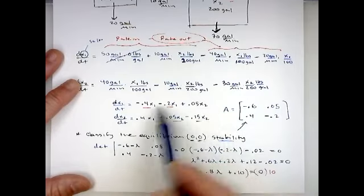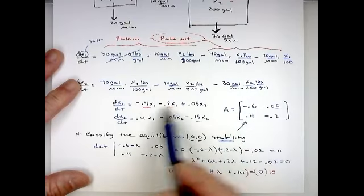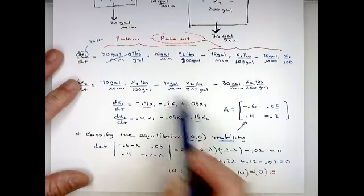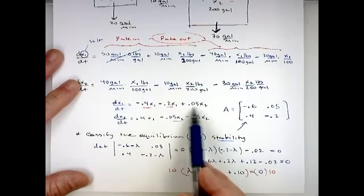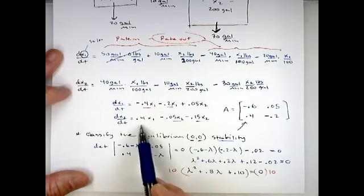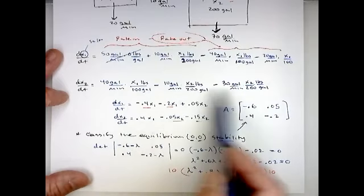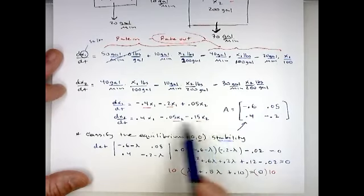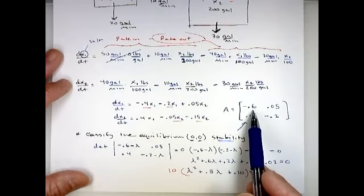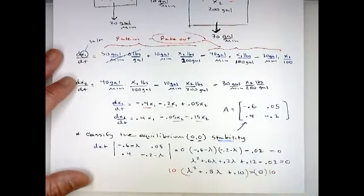Organizing with x1 terms first: the 40 over 100 is 0.4 and 20 over 100 is 0.2, both negative. The inflow from tank two is 10 over 200, which reduces to 0.05. For dx2/dt: positive 0.4 x1, minus the sum of 0.05 and 0.15 giving negative 0.2 x2 when like terms are combined.